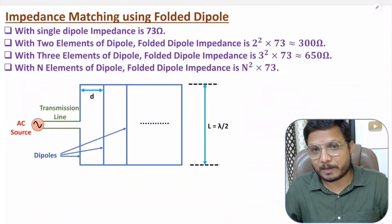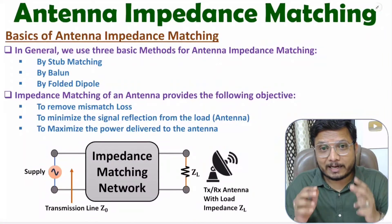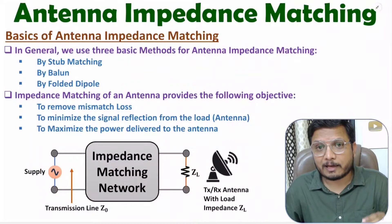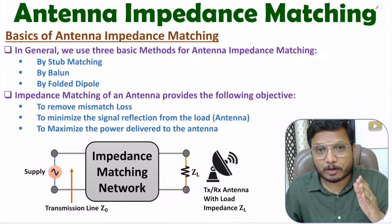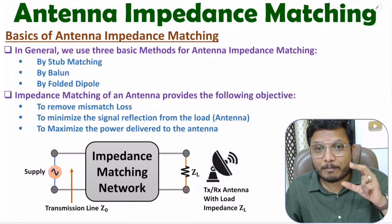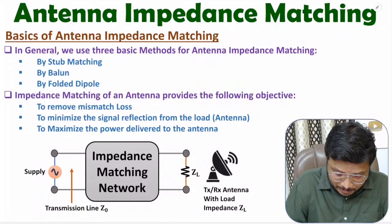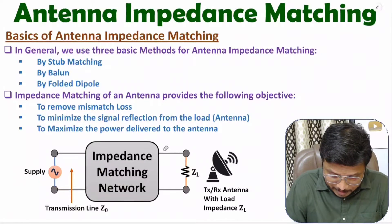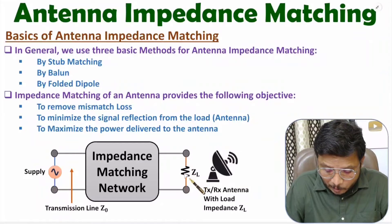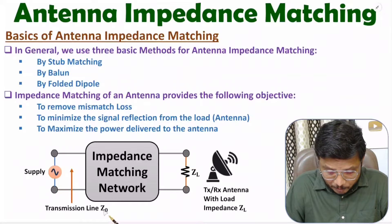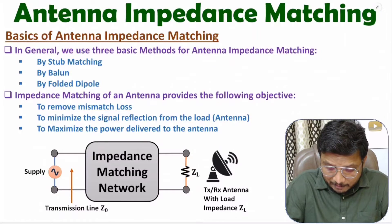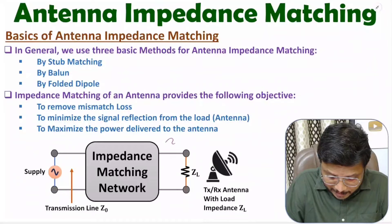To provide supply to the antenna we use a transmission line. The transmission line has characteristic impedance Z0, and that characteristic impedance should match the impedance of the antenna. Here we have a transmission line connected to a load — the antenna — with load impedance ZL and characteristic impedance Z0.